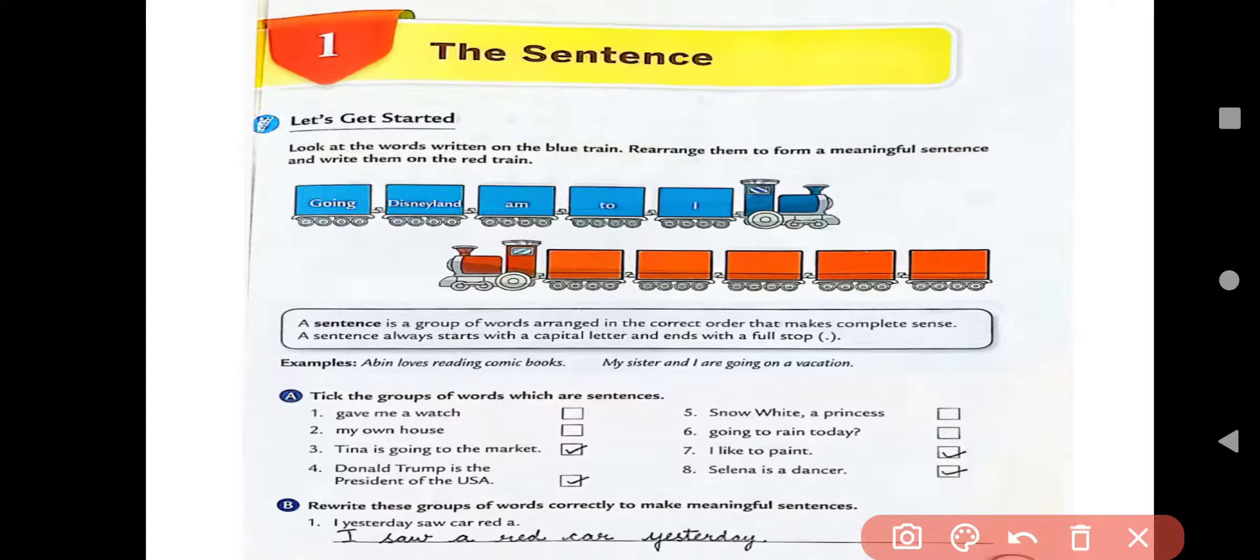So, let's do the exercise. The first one we will have, Take the group of words which are sentences. You have, Give me a watch. No. It has no meaning. And the next, My own house. No. It has also no meaning. And the third, Tina is going to the market. Yes, that will be sentence. And the fourth, Donald Trump is the president of the USA. Yes, it is also a sentence. And the fifth, Snow White, a princess. No. It's going to rain today. No. And the seventh, I like to paint. Yes, it has no meaning. Good. I like to paint. And the eighth, Selena is a dancer. Yes, it has also meaning. It is also a sentence.